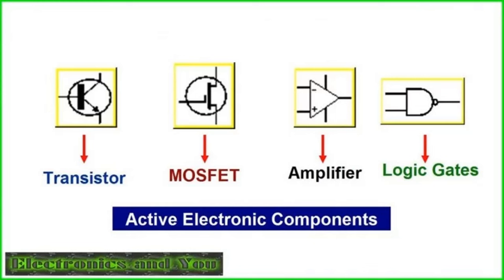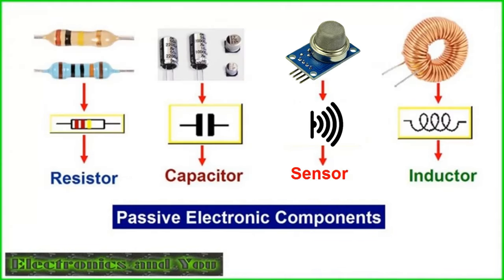Capacitors store electrical energy in an electric field when a voltage difference exists between their terminals. They are characterized by their capacitance, measured in farads (F). Capacitors come in different types, including electrolytic capacitors (polarized), ceramic capacitors, and tantalum capacitors, each with specific applications and characteristics.